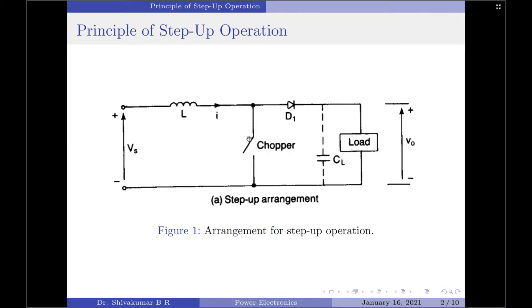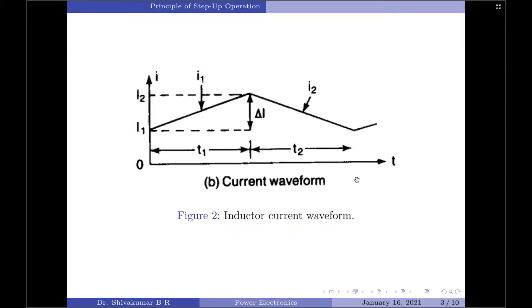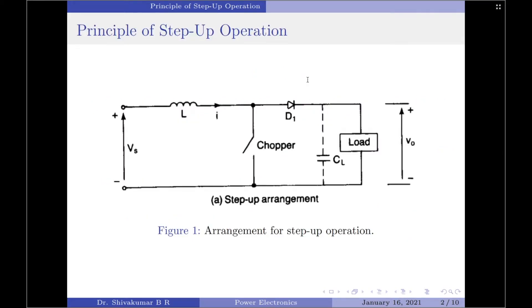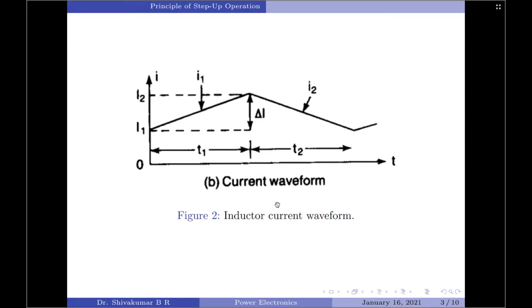The output voltage can be varied by turning the chopper switch on and off at regular intervals. When the chopper switch is closed for a time T1, energy is stored in the inductor and the inductor current rises. This causes an EMF to be induced at the inductor. During this period no current flows through the load, so the load current is zero. The voltage across the inductor is given by VL = L · di/dt. Assuming continuous load current operation, the initial inductor current is denoted as I1 and the final value as I2, as shown in the inductor current waveform.